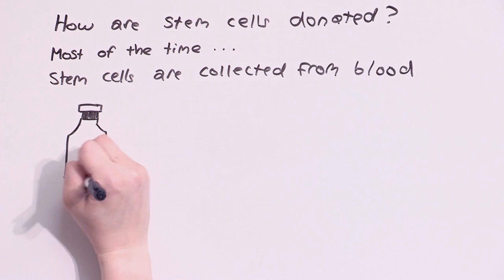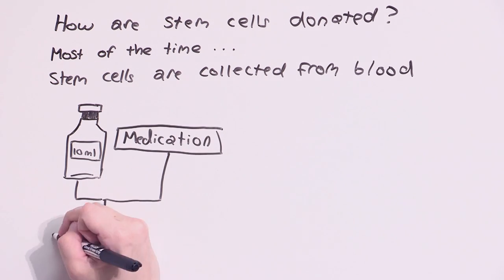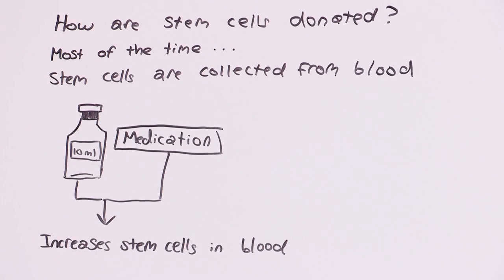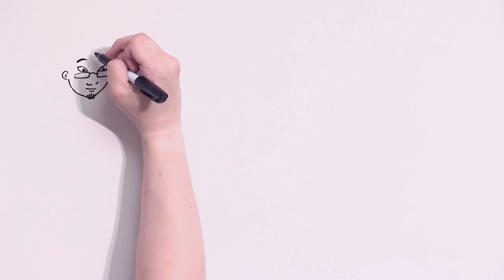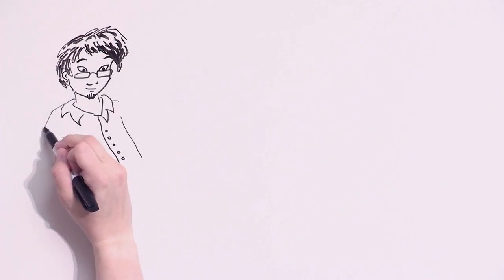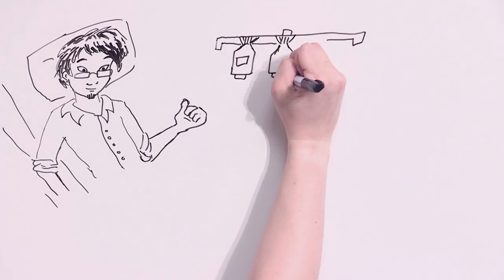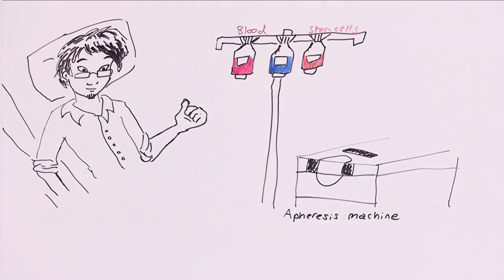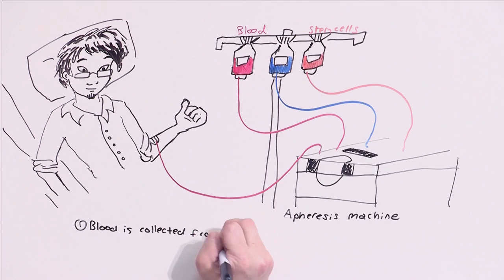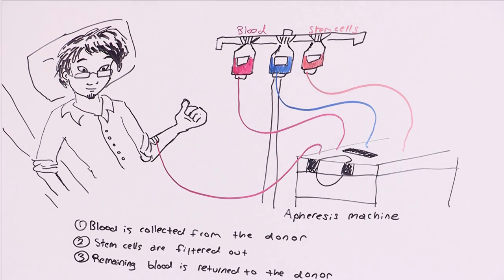Most of the time, stem cells can be collected from blood. The donor is first given a medication that increases the number of stem cells in their blood. Then, blood is collected from the donor, run through a sorting machine to filter out some stem cells, and then the rest of the blood is returned to the donor. The stem cells are then used to help the patient in need.